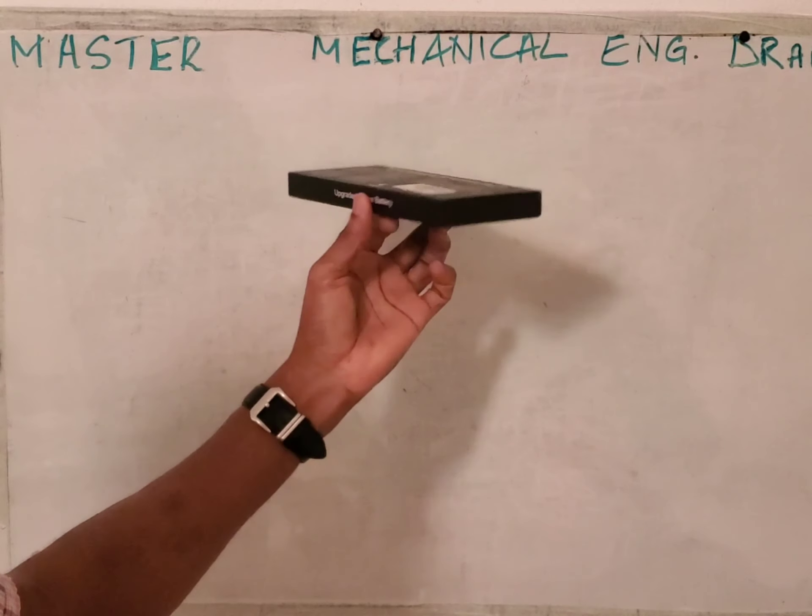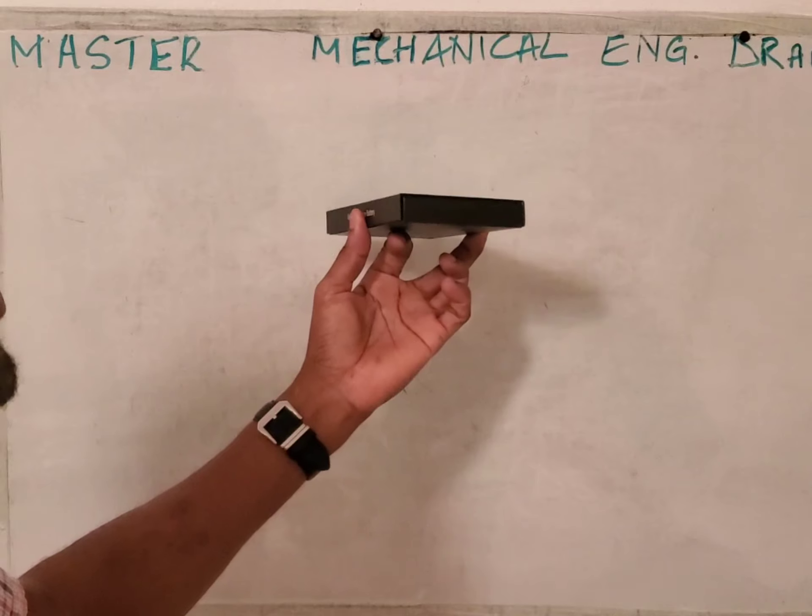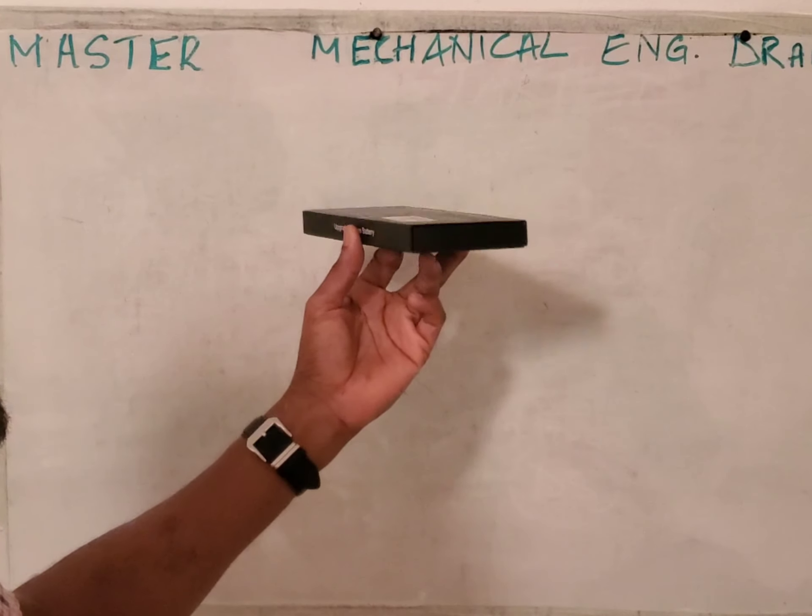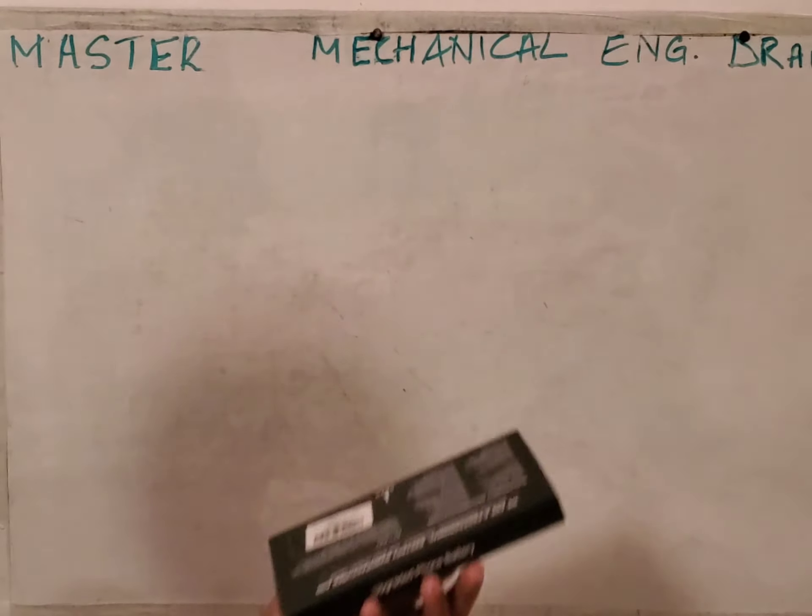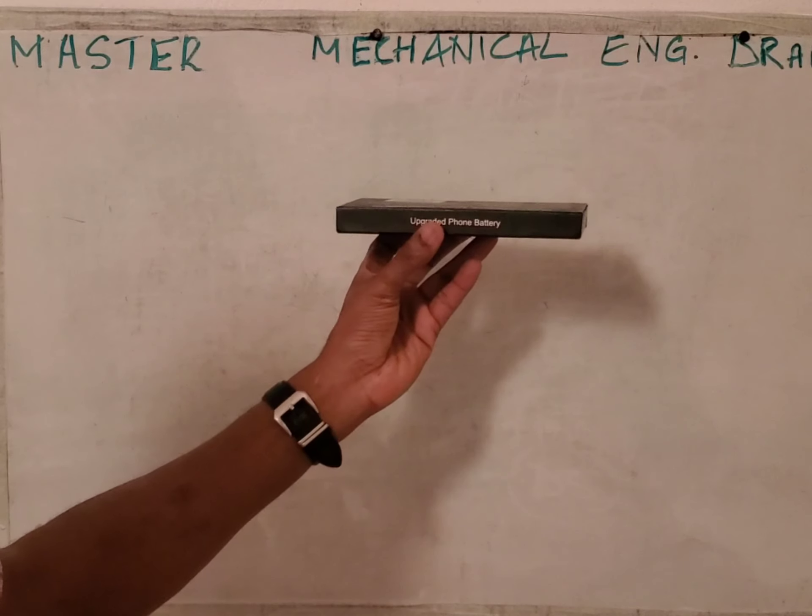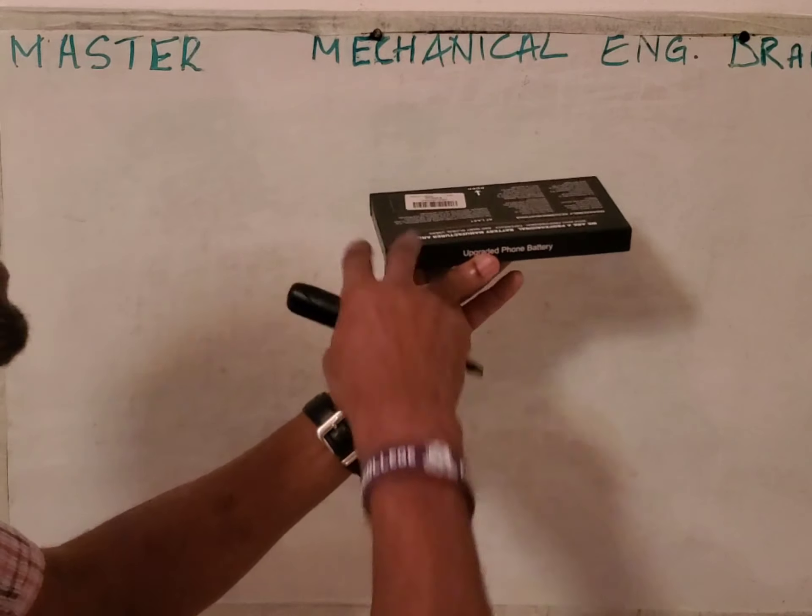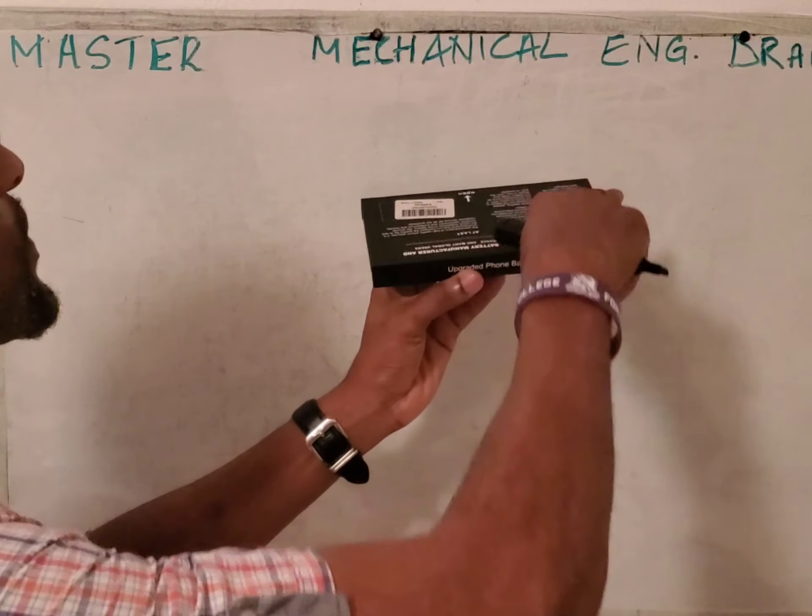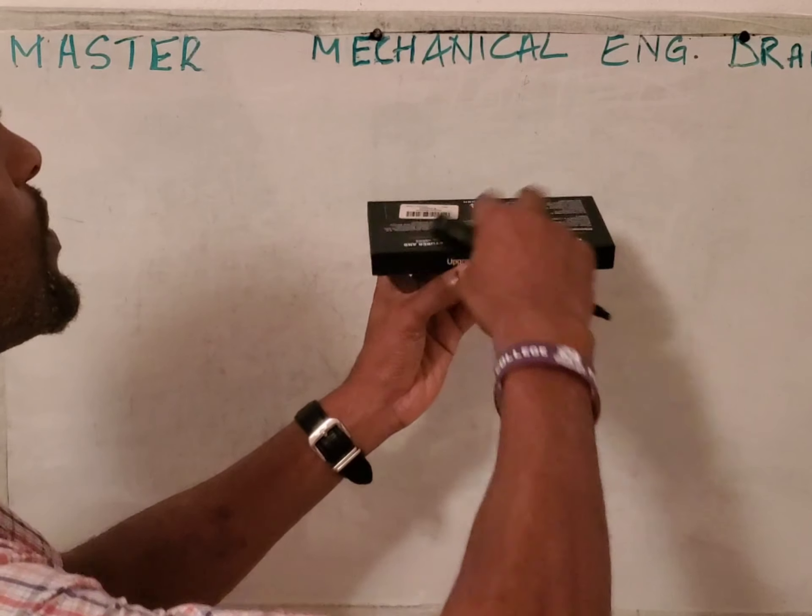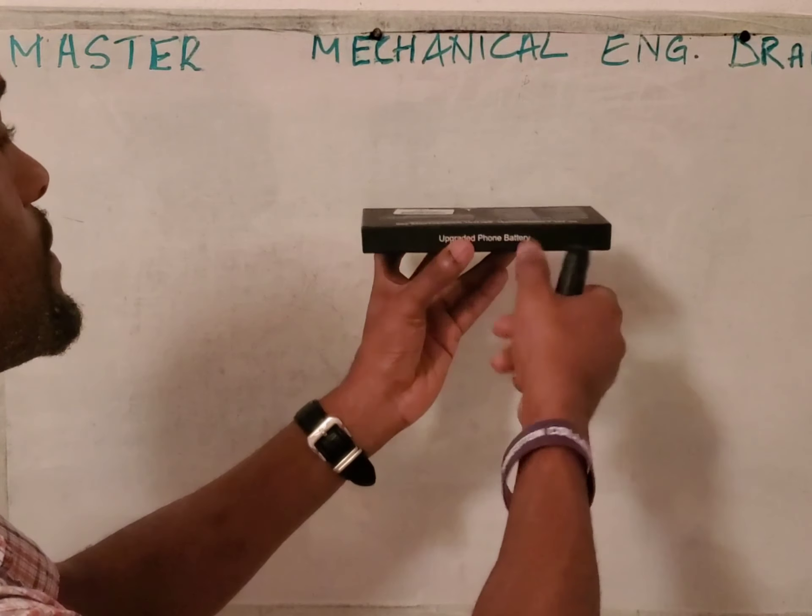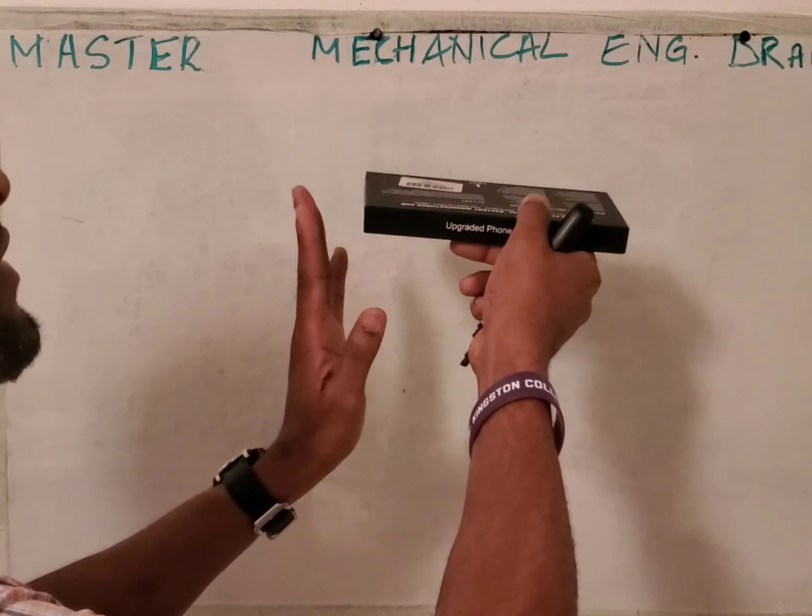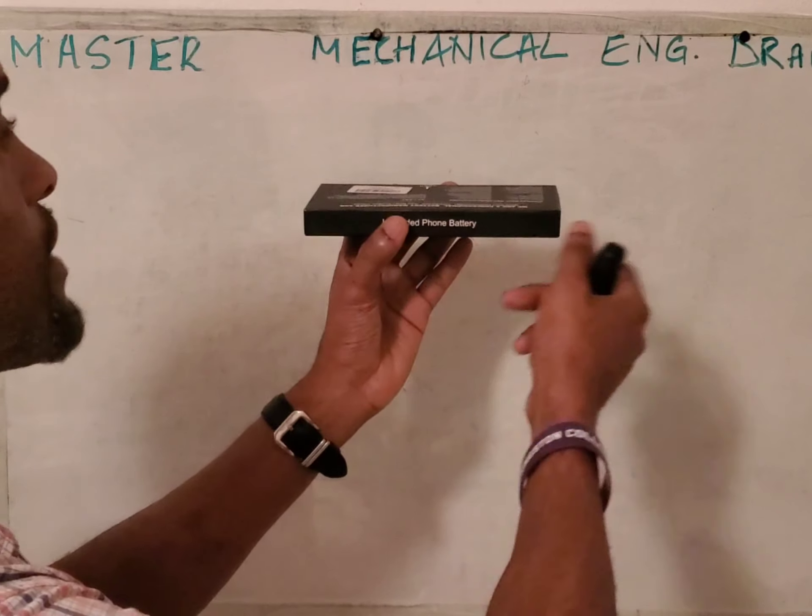This in isometric projection and also produce the orthographic view for this. Here we have a box, and here this section is our top view. Here is our front, this is our left or left end elevation, and right end elevation.